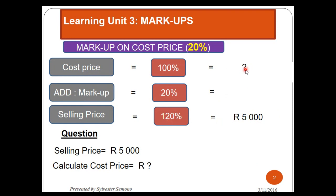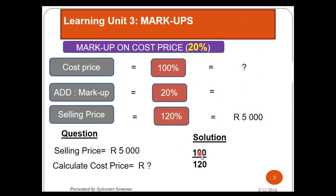Can you see the percentages? Wherever you put the question mark, you are going to put that percentage on top — meaning I'm going to have 100 on top. Because I put the question mark on cost price, I will put 100 on top. Because I know the selling price, I will divide by 120. What I'm looking for, divide by what I've been given. So I'm going to multiply by 5,000, and my answer is 4,166.67.